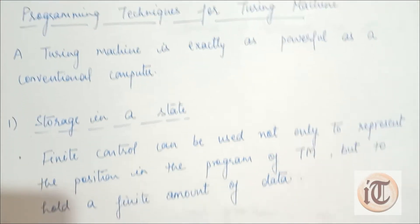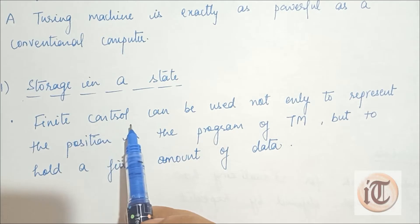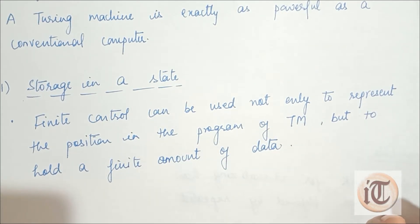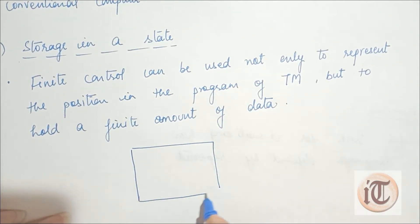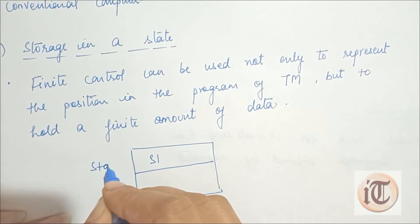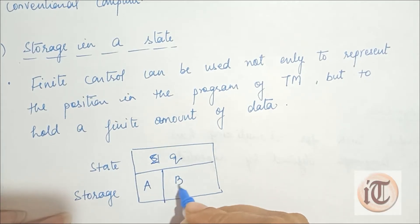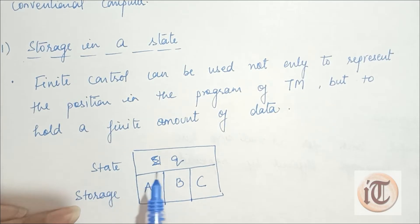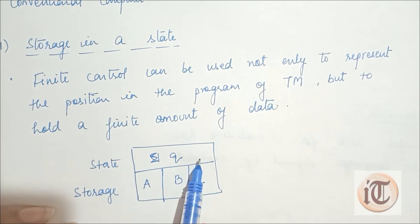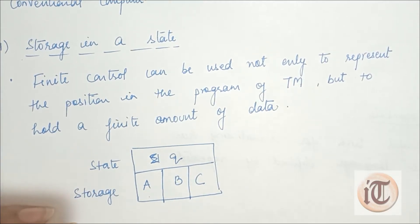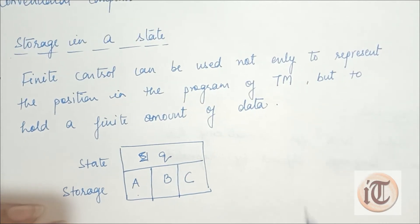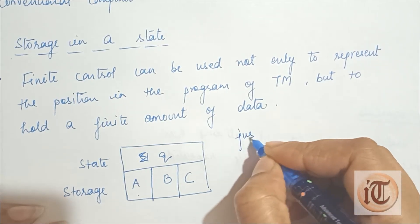The first technique is called storage in a state. In this technique, the finite control can be used not only to represent the position in the program of a Turing machine, but to hold a finite amount of data. Suppose we have a state Q and also a storage space for containing three elements A, B, and C. So the finite control consists of not only the control state Q but also the three data elements A, B, and C.